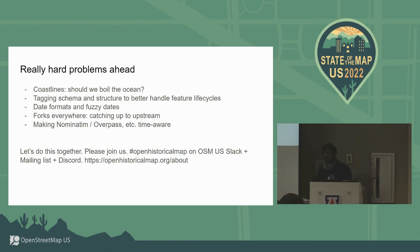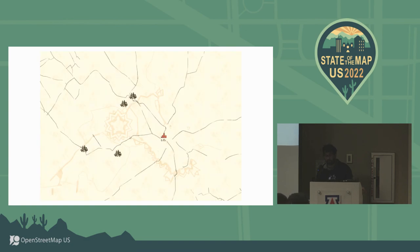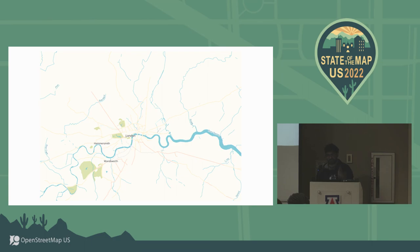Making things like Nominatim and Overpass time-aware is something I don't even know where to start, but hopefully people who know these things better can jump in. Let's do this together — there are hard problems ahead and we really hope more people jump in to help. You can find Open Historical Map on the OSM US Slack, on Discord, and all the details are on the about page. I encourage you to please check out openhistoricalmap.org and see these things for yourself.